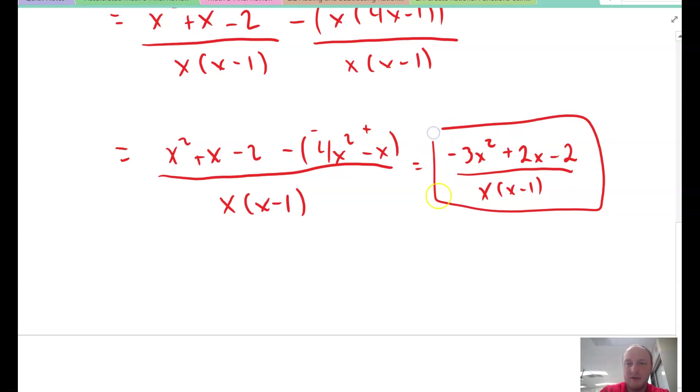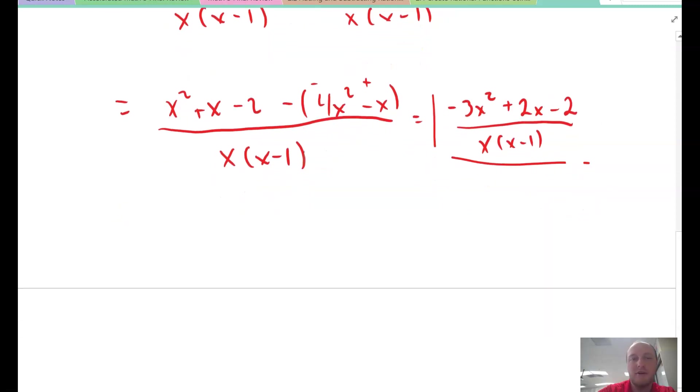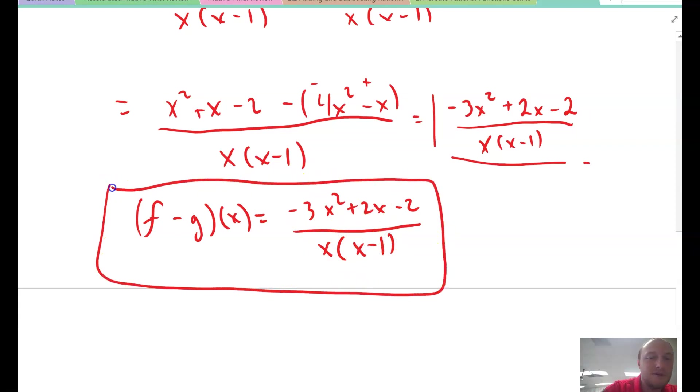Actually, I'm going to adjust this. They want a new function. Generally, when they want something in a function, write it in function form. So this is f minus g of x equals negative 3x squared plus 2x minus 2 over x times x minus 1. Here's your function. That would be your answer that you would box. Make sure you rewrite that notation.